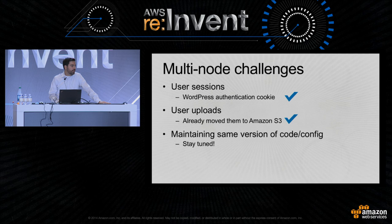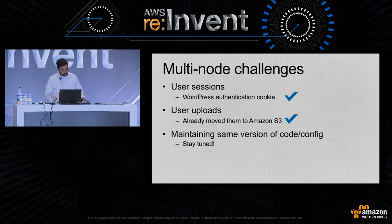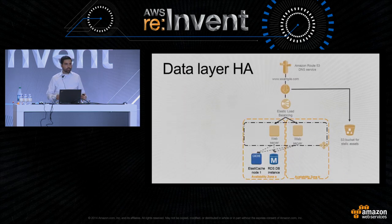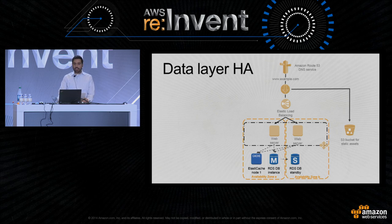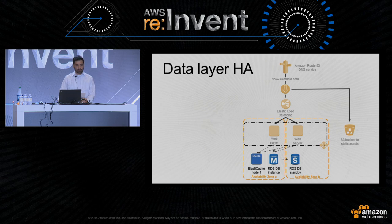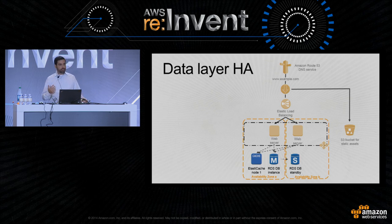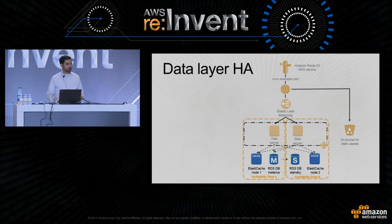The other challenge is how to maintain the same version of code and configuration on all web servers. I'll show a simple approach using Elastic Beanstalk to solve that. For the database, I also need high availability, so I upgrade my RDS instance to be a multi-AZ one — RDS will maintain a synchronously replicated instance in a different availability zone with automatic failover. For ElastiCache, it automatically replaces individual nodes that fail. It's also good practice to spread cache nodes across different availability zones using ElastiCache's flexible node placement feature.